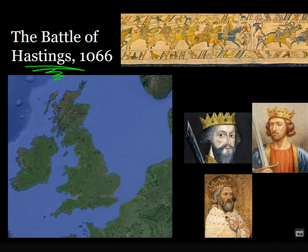A battle that took place about a thousand years ago is the reason about one billion people in the world today speak some form of the English language, and that was called the Battle of Hastings. It produced some really colorful characters like William the Conqueror, Harold Godwinson, Harold the Confessor. It took place in England down here along the southern coast and produced a piece of art known as the Bayeux Tapestry.